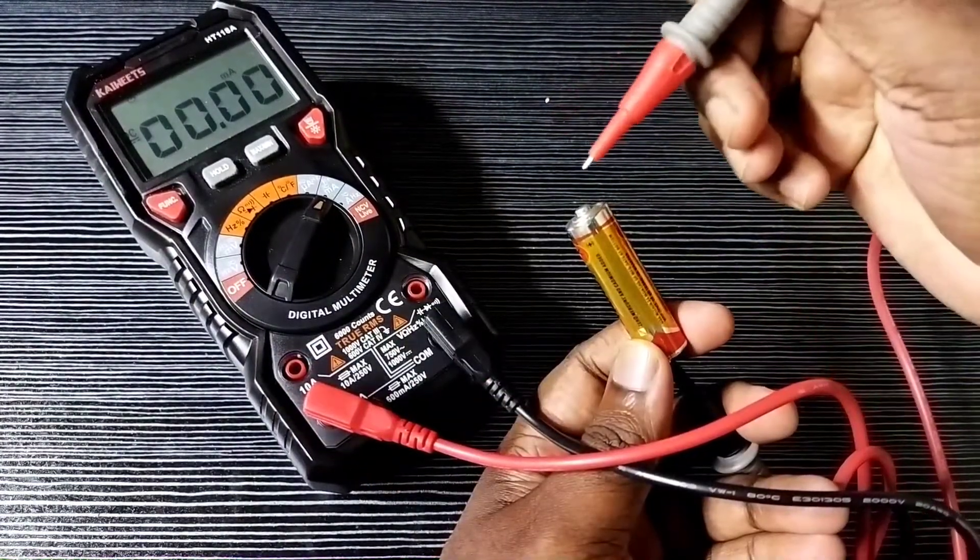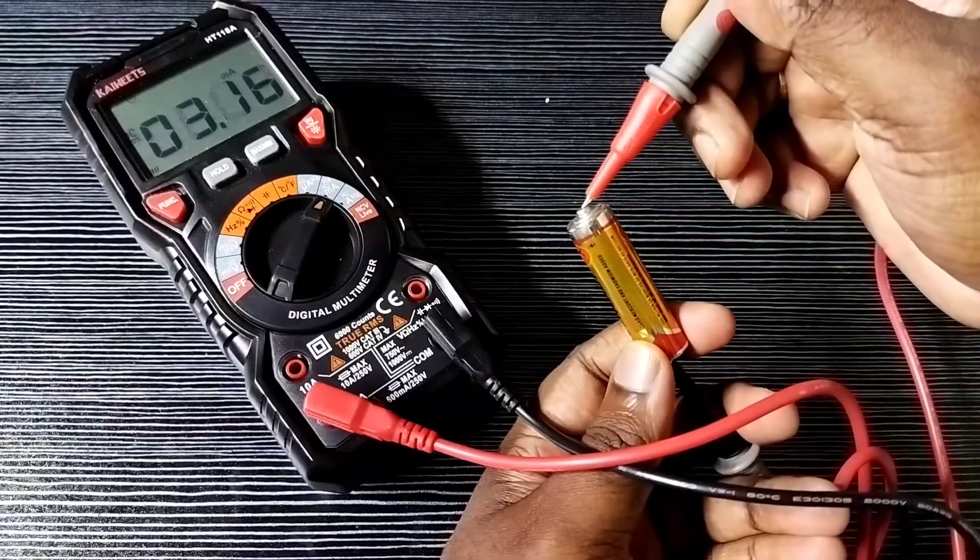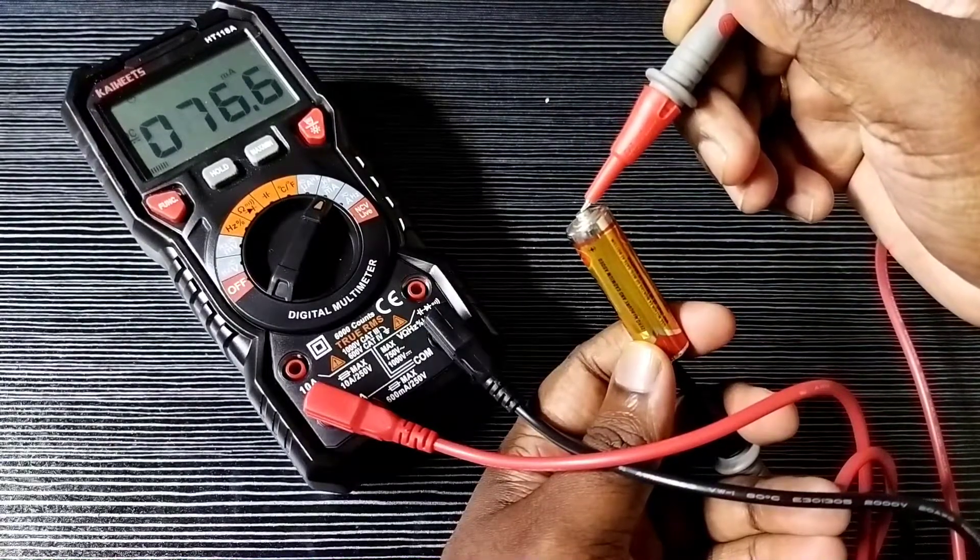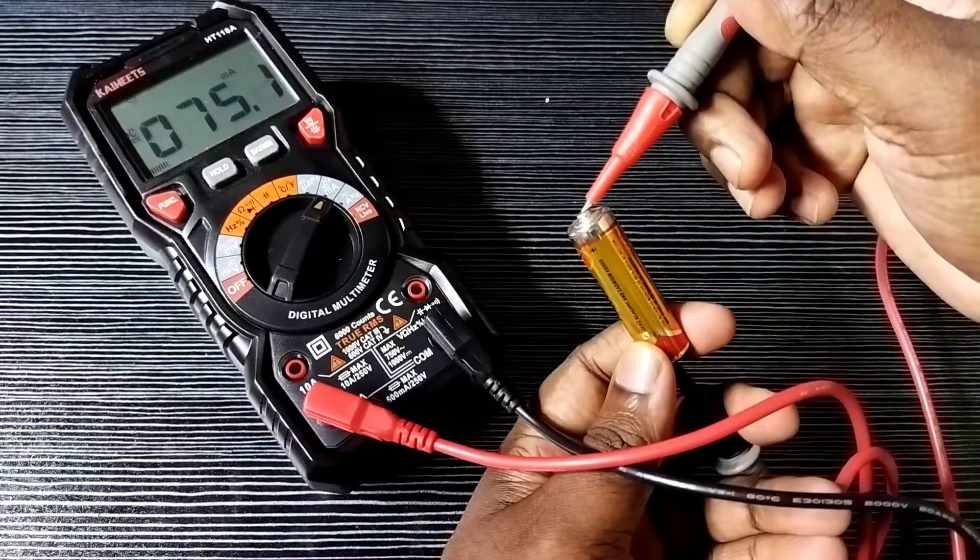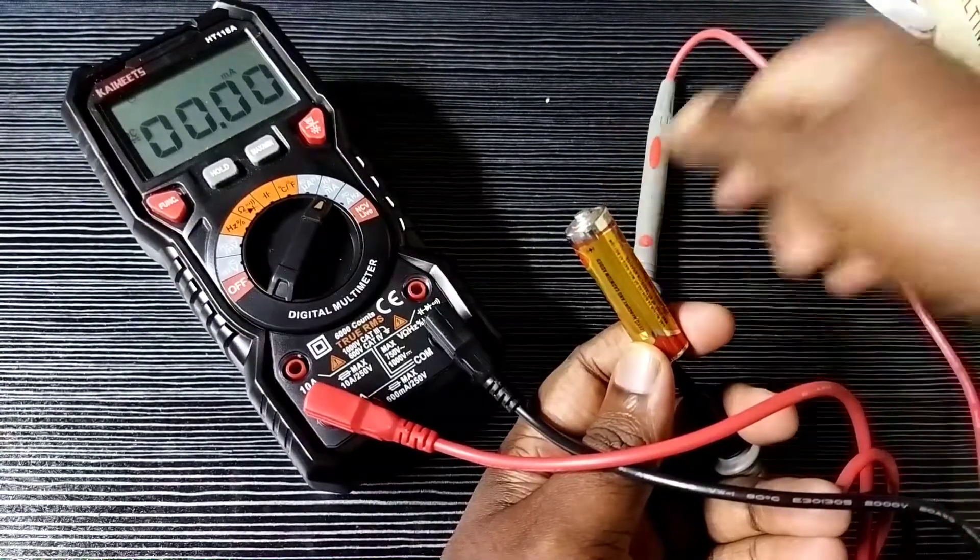Then measure again. Now we are reading in micro ampere. This way we can measure DC current or battery current.